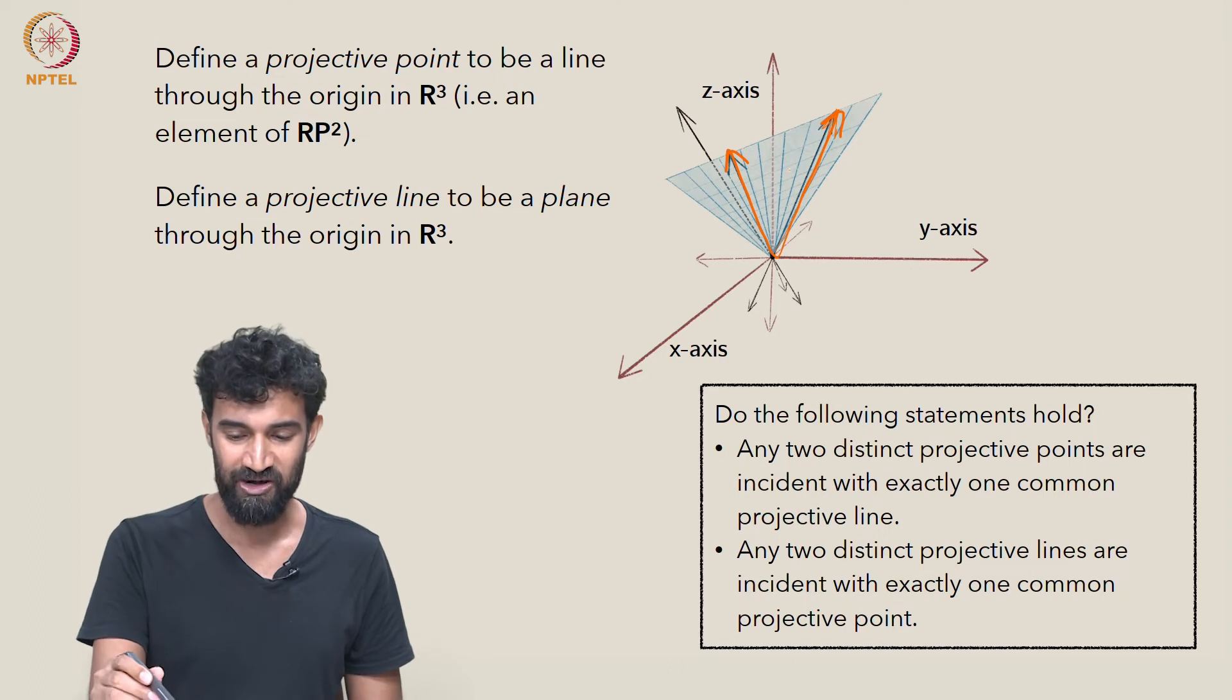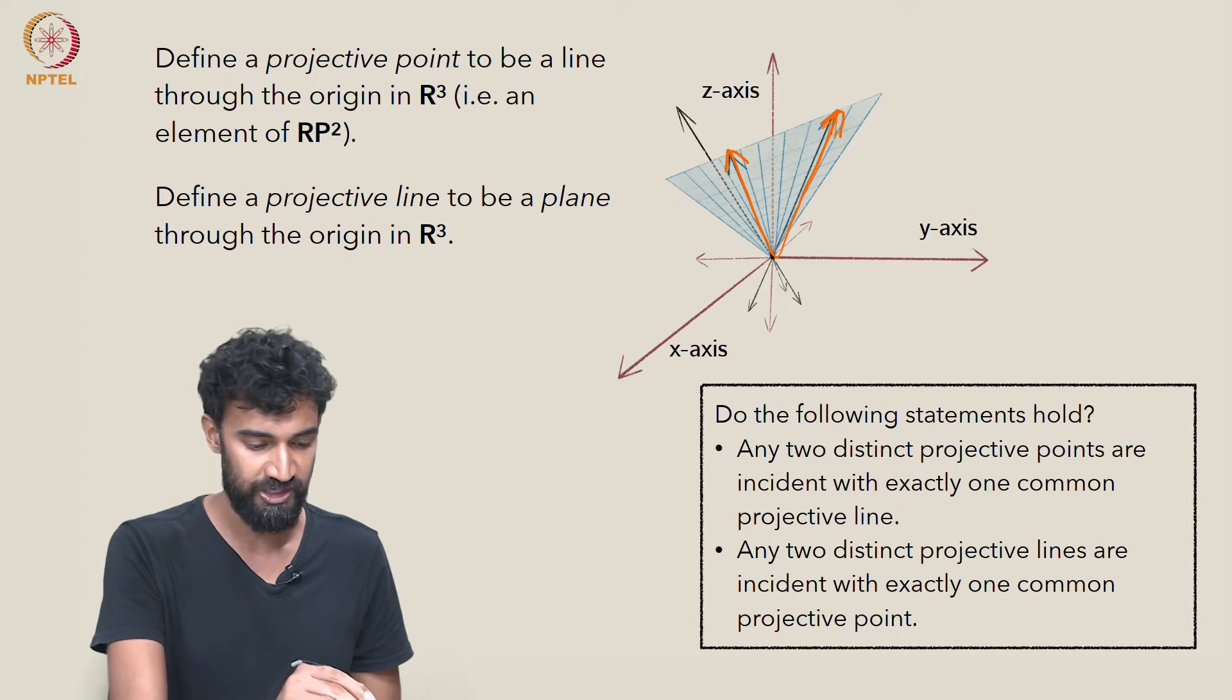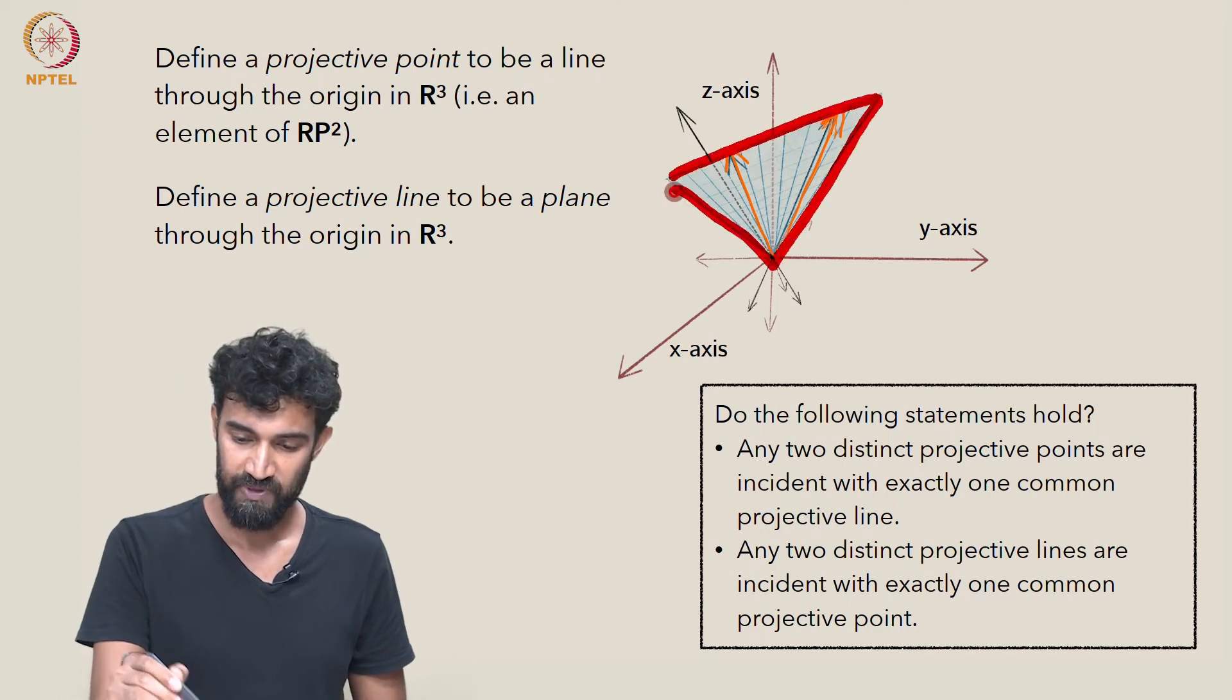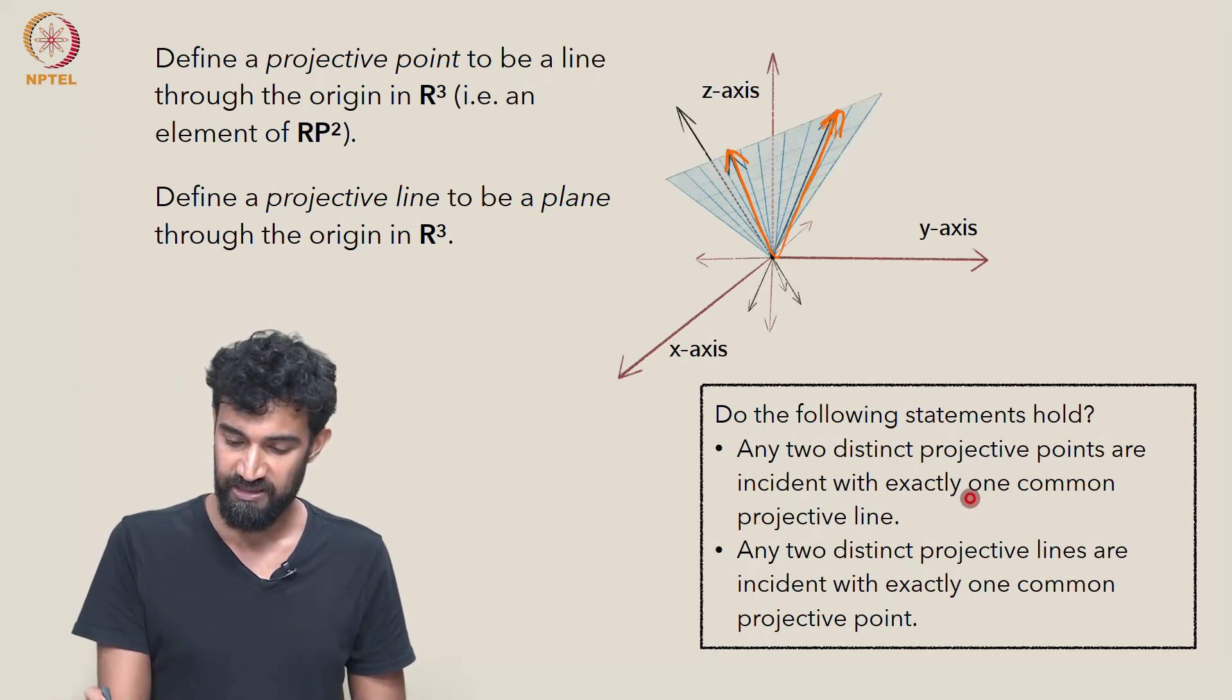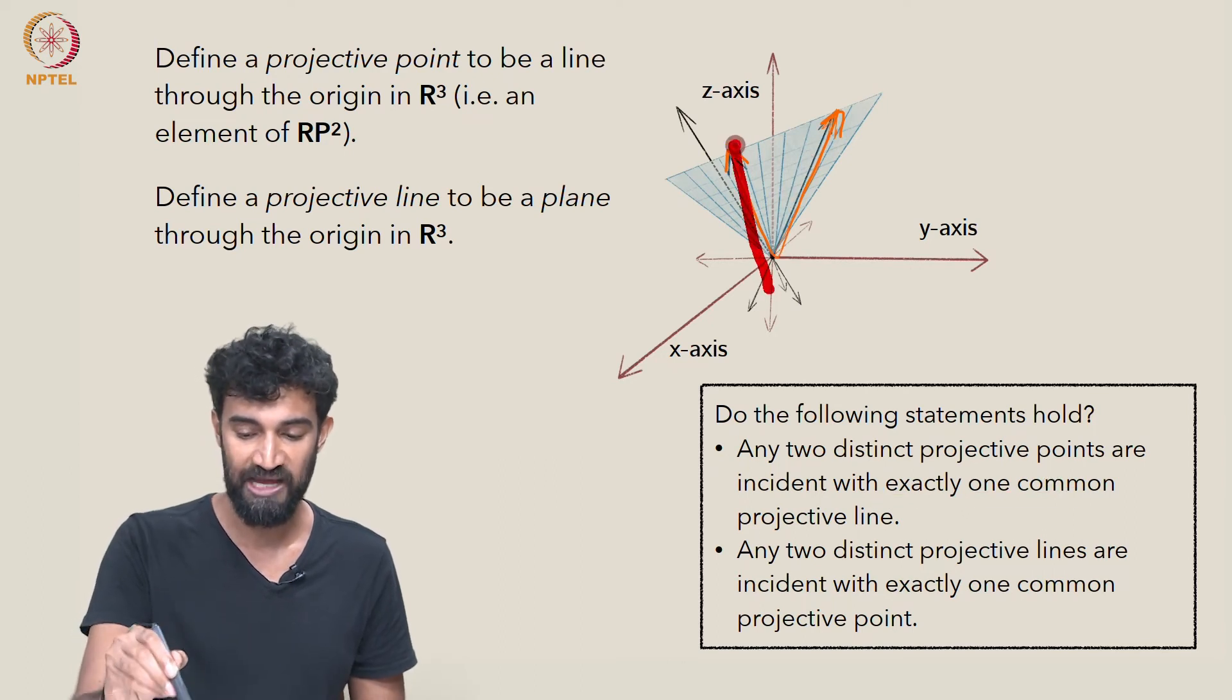Well, in this picture they are. It's just this plane, this line that I've drawn. It's the plane through the origin that's marked in blue here. And is there exactly one plane through the origin containing these two lines through the origin?